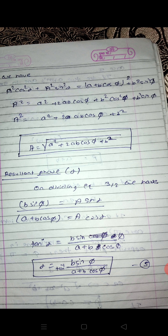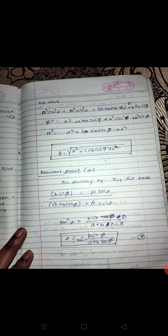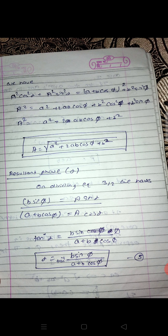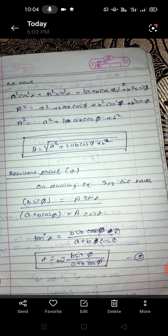Now let's look at the resultant phase. How do we get the resultant phase? On dividing equation 3 by equation 2, we have: b sinφ = A sinα upon A cosα = b sinφ is equal to A sinα and a + b cosφ is equal to A cosα. We know that sin upon cos is tan.